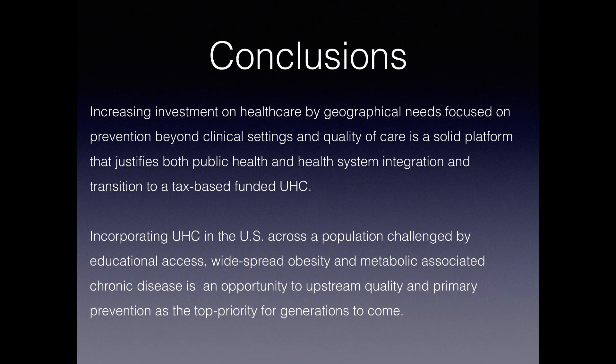In conclusion, increasing investment in healthcare by geographical needs focused on prevention beyond clinical settings and quality of care is a solid platform that justifies both public health and health system integration and transition to a tax-based funded universal healthcare model. Incorporating universal healthcare in the United States across a population challenged by educational access, widespread obesity, and metabolic-associated chronic disease is an opportunity to upstream quality and primary prevention as the top priority for generations to come.